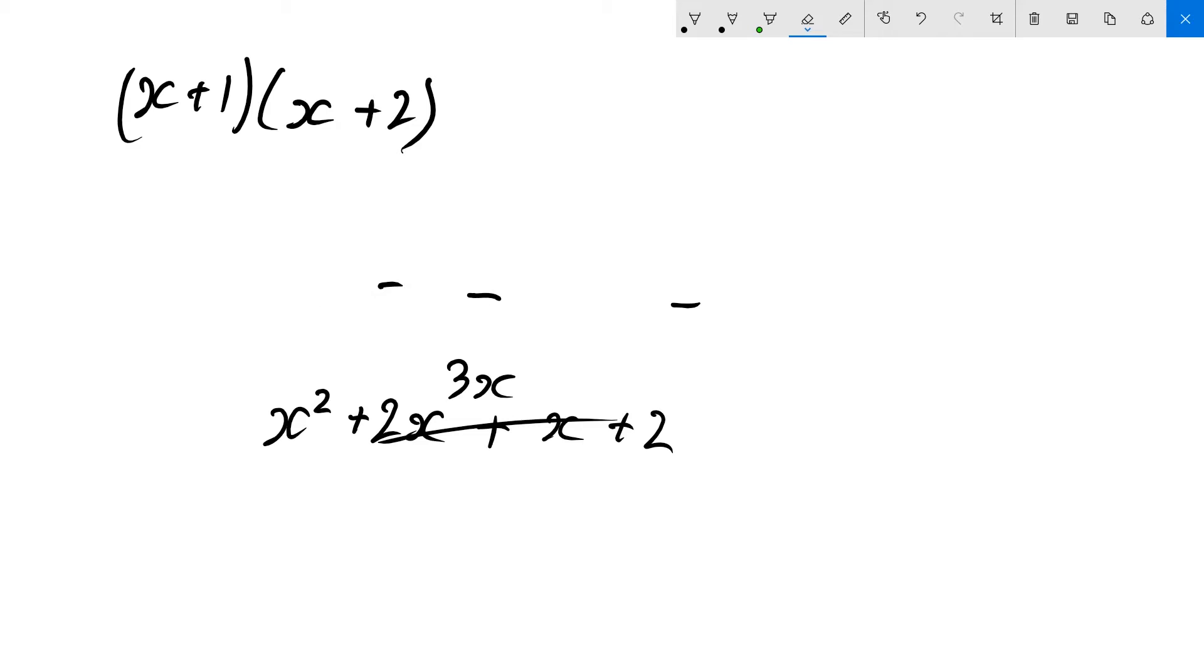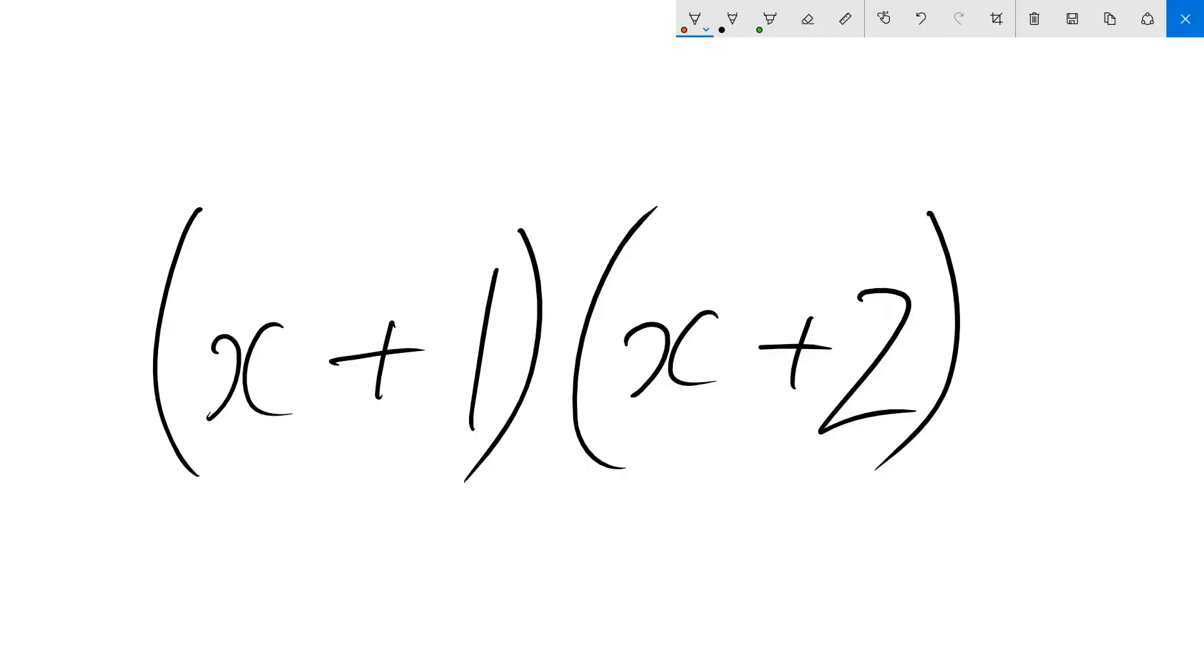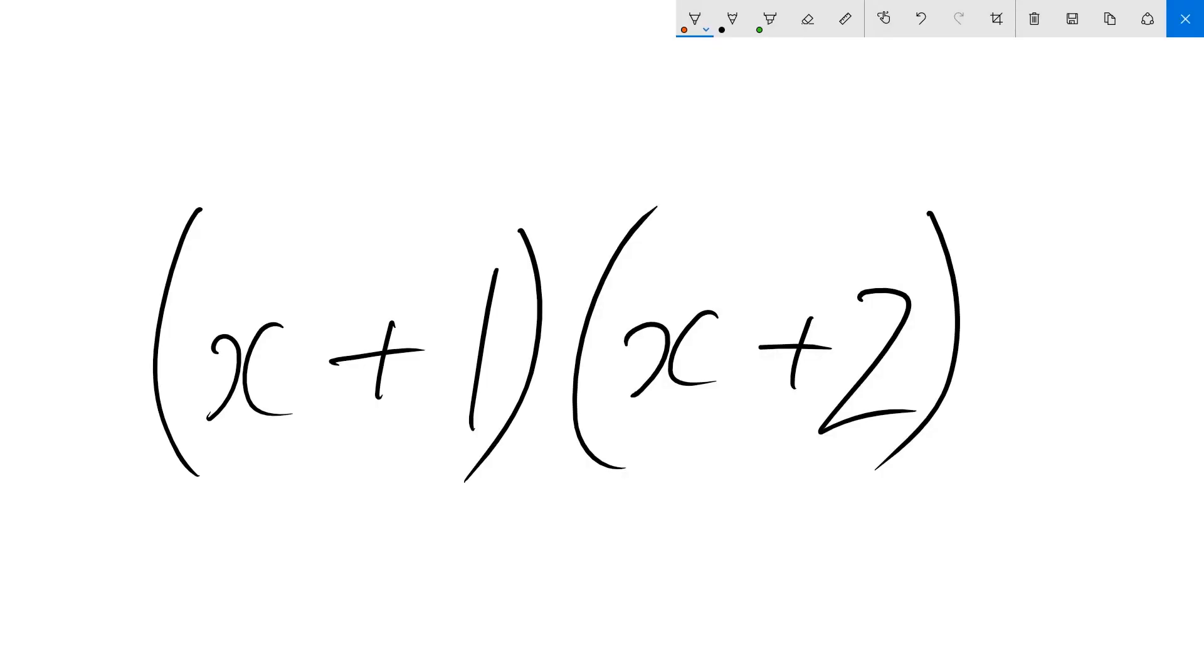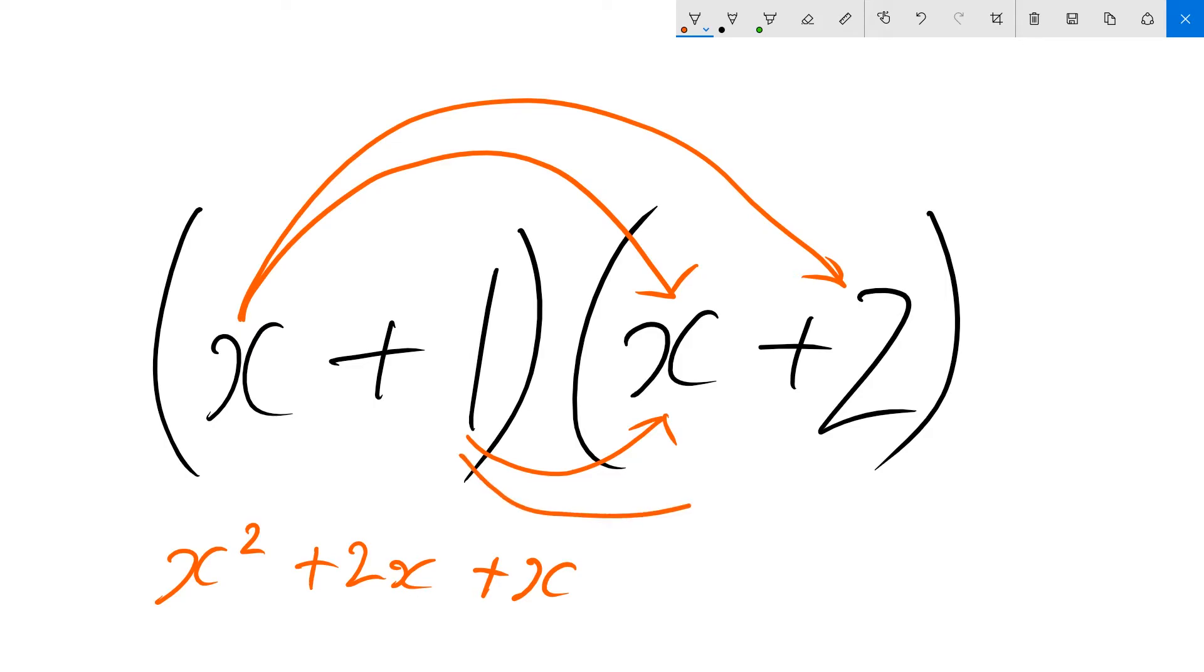Another way of writing that is just by drawing some arrows, so you know what you've timed by what. So I want to times x by x and I get x squared. Then I want to times x by 2 and I get 2x. Then I'm done with x so I can go to 1. So 1 times x, that's just x, and 1 times 2, that's just 2. Collect like terms, 3x.